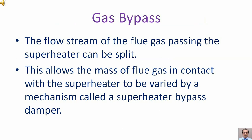Gas bypass. The flow stream of the flue gas passing the superheater can be split. This allows the mass of flue gas in contact with the superheater to be varied by a mechanism called a superheater bypass damper.